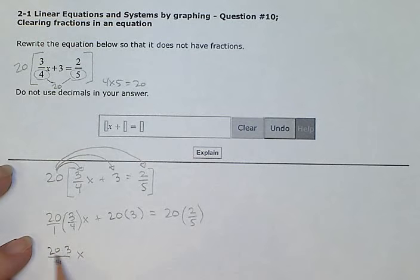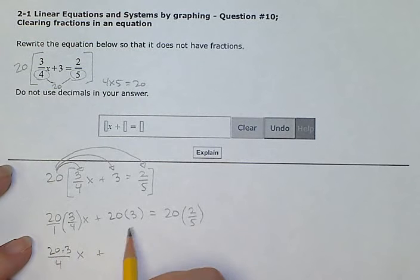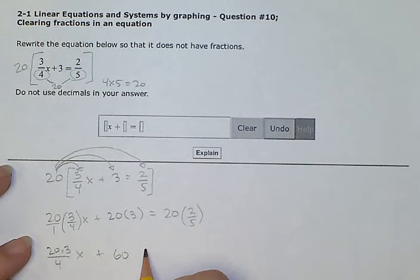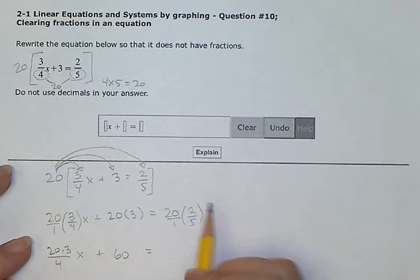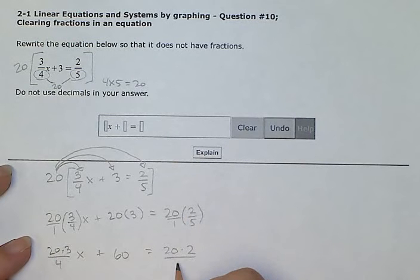So this is what I'm putting into my calculator. 20 times 3 divided by 4 to get 15. These two are whole numbers so I'm going to say 20 times 3 and that's 60. This next one, I'm going to use it like a fraction. 20 times 2 over 5 times 1 which is 5. 20 times 2 is 40.